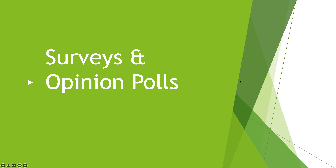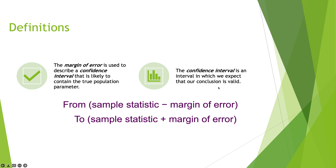Now we're going to talk about surveys and opinion polls, making sense of them and determining their validity. It starts with the margin of error. You'll hear this constantly during political polls where they'll say a poll from Quinnipiac or Rasmussen or CNN has a margin of plus or minus two and a half percent. The margin of error is used to describe a confidence interval that is likely to contain the true population parameter.